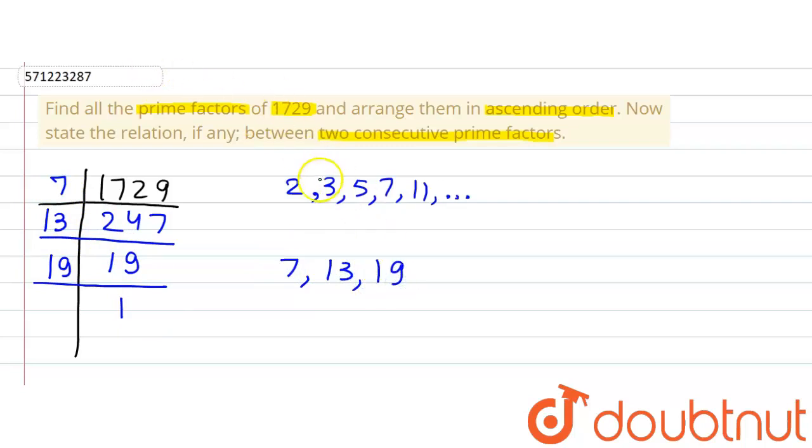Now in the question, we were asked if there's any relationship between any two consecutive prime numbers. We can observe that the difference between 13 and 7 is 6, and the difference between 19 and 13 is also 6. So the relationship is that the difference between consecutive prime numbers is 6.